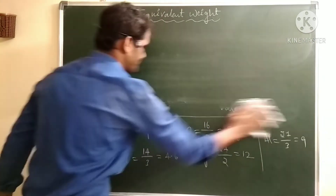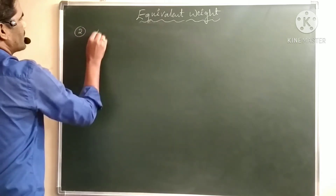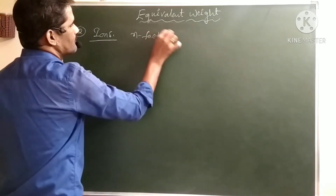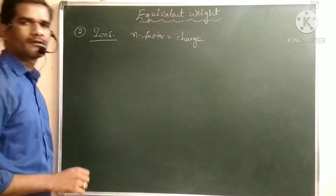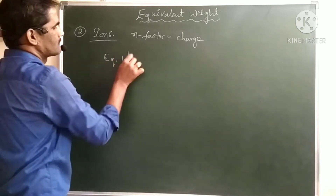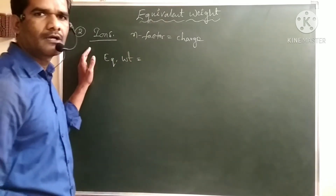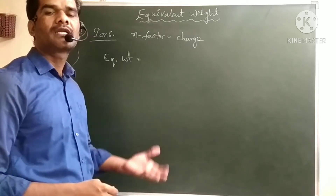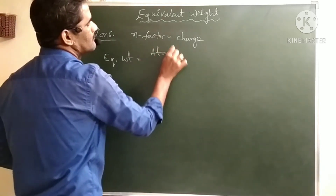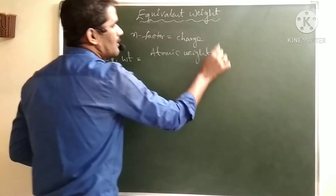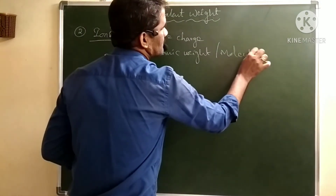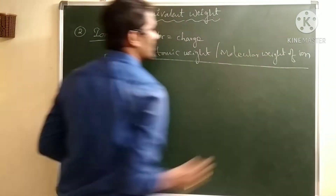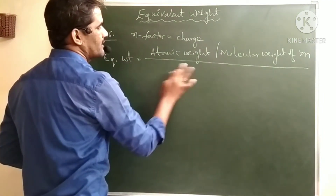Next, equivalent weight of ions. For ions, the n-factor is equal to the charge present on the ion. So equivalent weight of ions equals the atomic weight — if it is a single-atom ion — or the molecular weight if it is a polyatomic ion, divided by its n-factor, where the n-factor here is the charge.